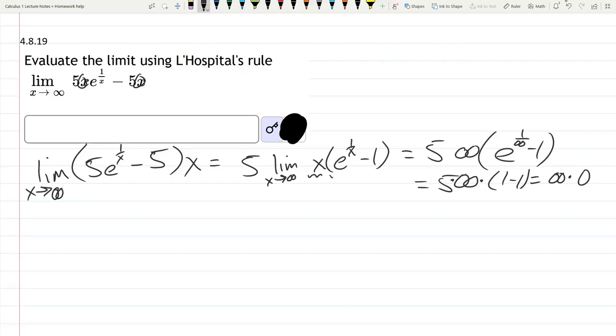There's basically two terms in here, and I'm going to put the easier term into the denominator. So we have (e^(1/x) - 1) divided by the reciprocal of x, which is 1/x.